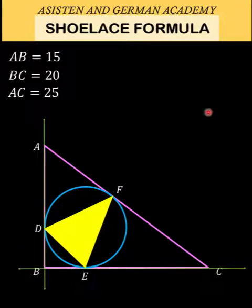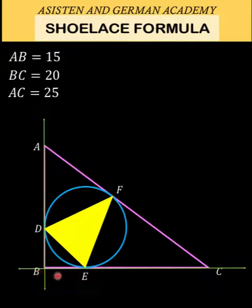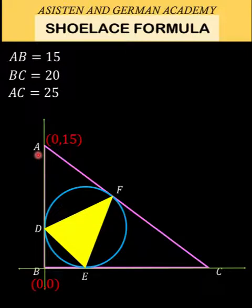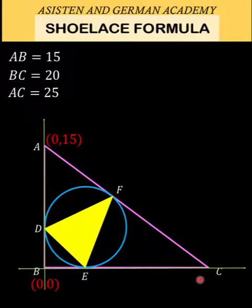Our main goal first is to situate our triangle in a Cartesian plane, specifically in the first quadrant. Point B has a coordinate of (0, 0). Since side BA equals 15 units, point A has a coordinate of (0, 15). Since BC equals 20 units, point C has a coordinate of (20, 0).